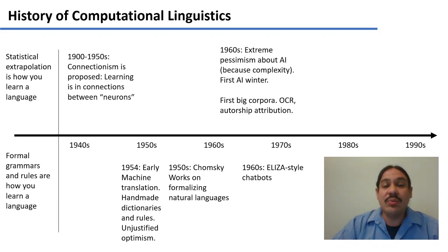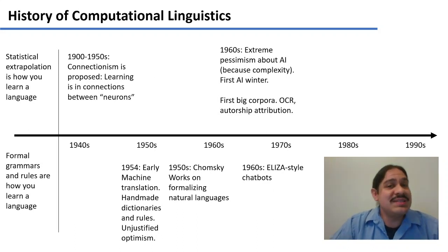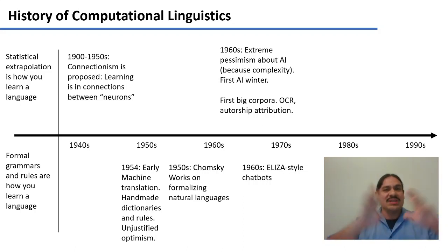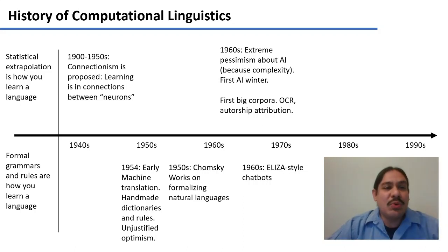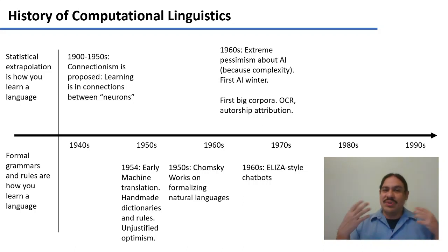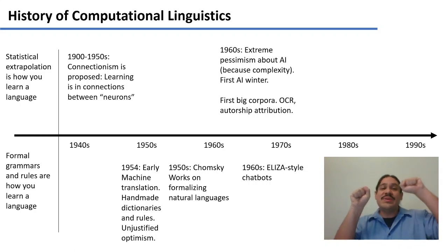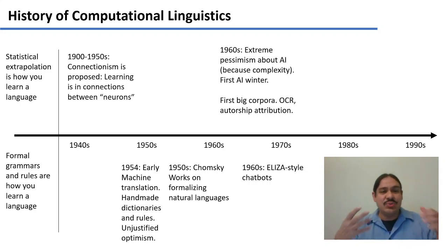Here we have a timeline of research in computational linguistics and natural language processing, and the timeline has two components. On the upper part, you will see approaches that believe that statistical extrapolation — trying to find statistical patterns or frequency patterns in a text — is the way to learn a language.